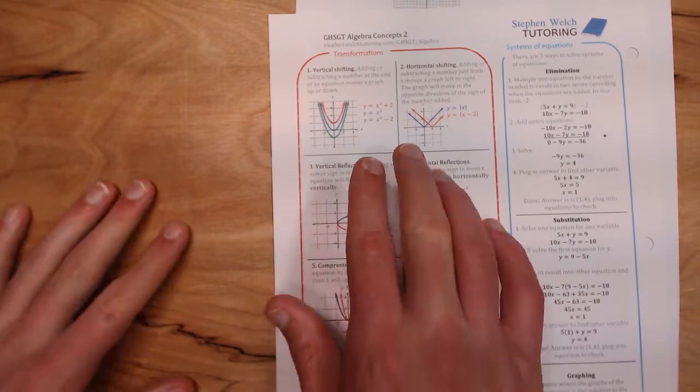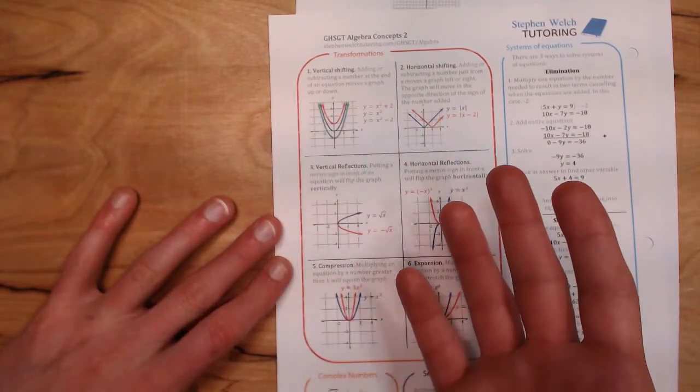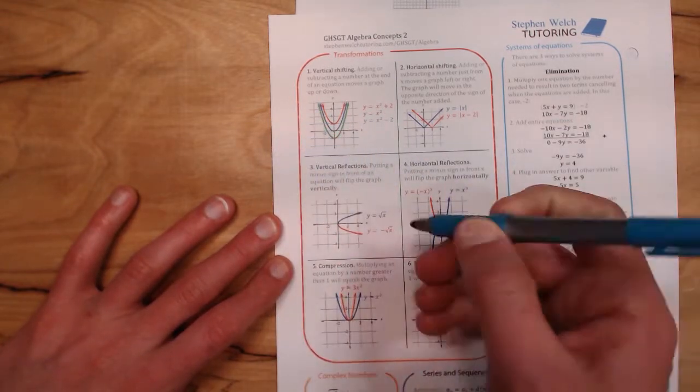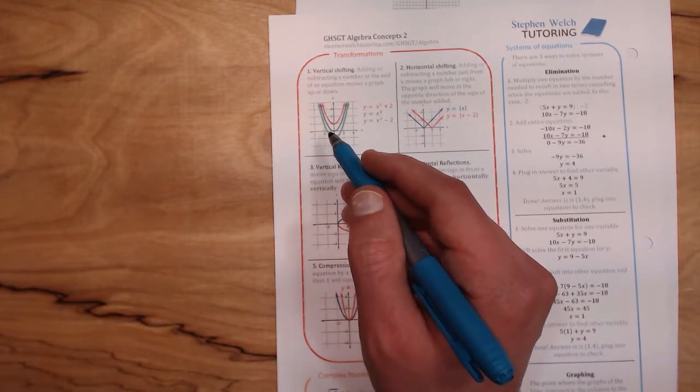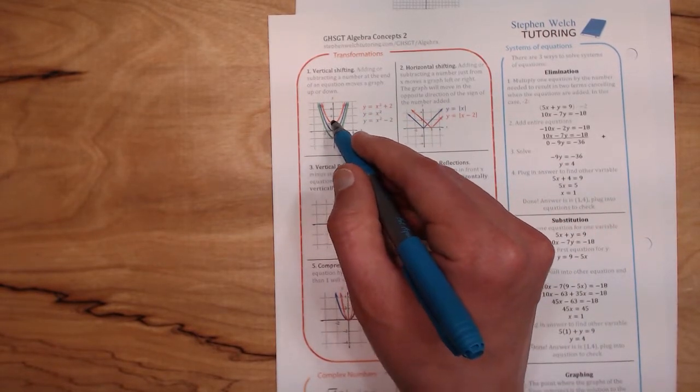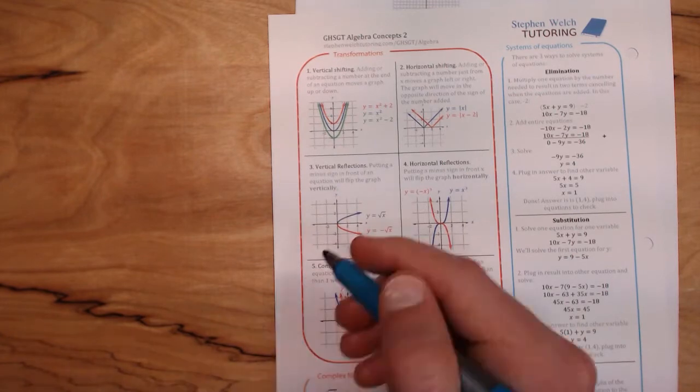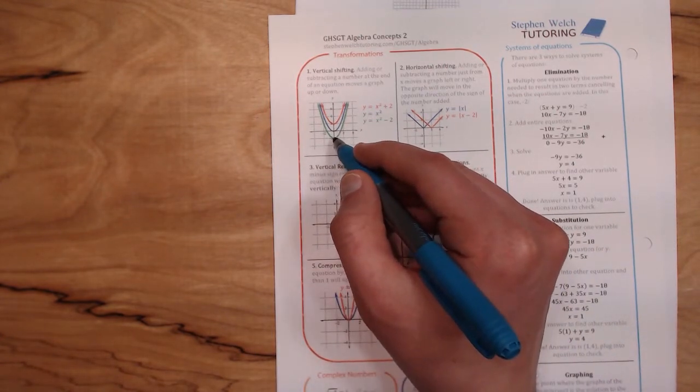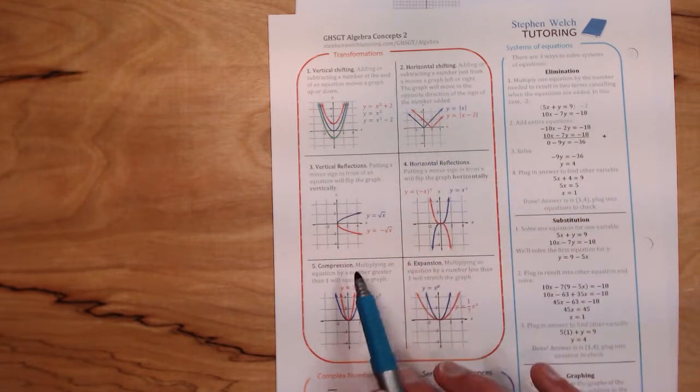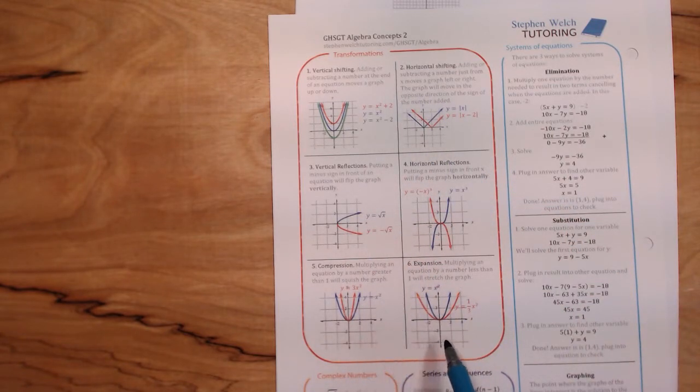For example, the first one is vertical shifting. If I take that parabola, this blue curve from the back page, the x squared, and if I add 2 to the end of the equation, I'm going to move my parabola up 2 units. If I subtract 2, I'm going to move it down 2 units. There are five more of these, so when you have a chance, please review these and I'll refer to this while working on the worksheet.